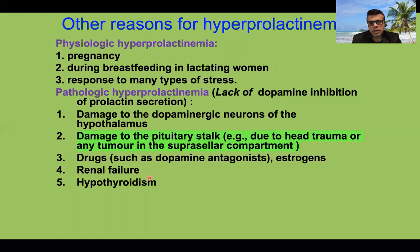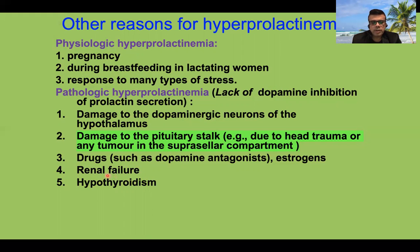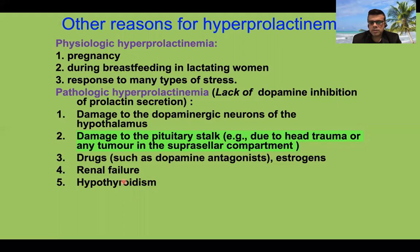Prolactinomas can be treated with transsphenoidal surgery or the dopamine agonist bromocriptine. Other causes of hyperprolactinemia include damage to the pituitary stalk from tumors or hypothalamic trauma, various drugs, and hypometabolic states like renal failure and hypothyroidism. These are salient features of prolactinoma and hyperprolactinemia that are frequently tested in exams.